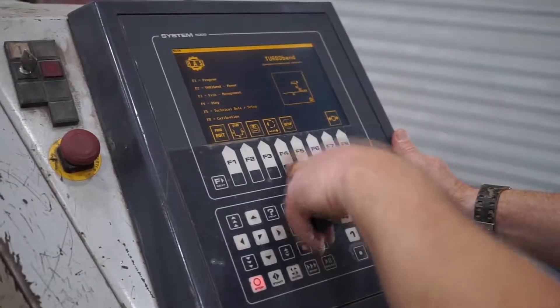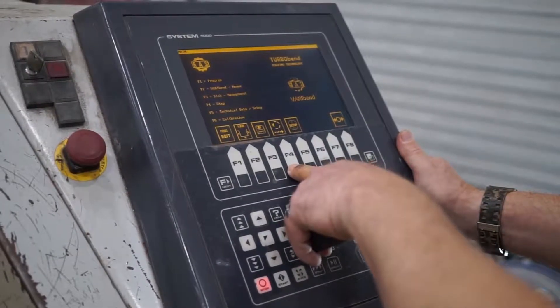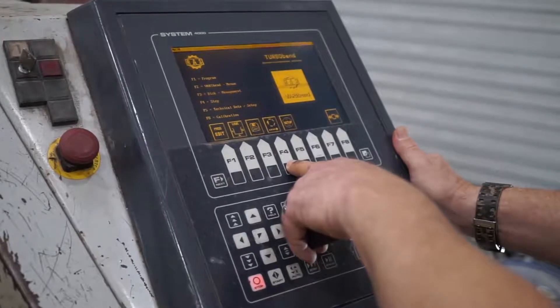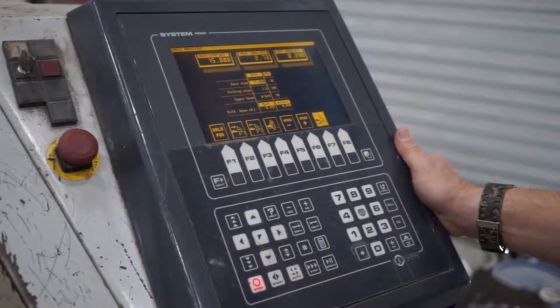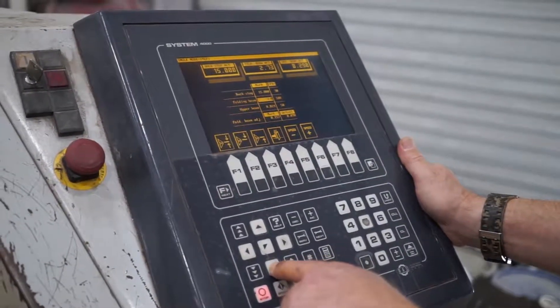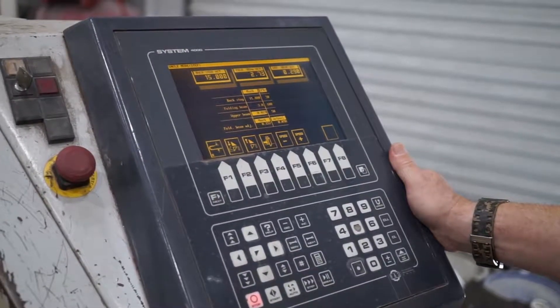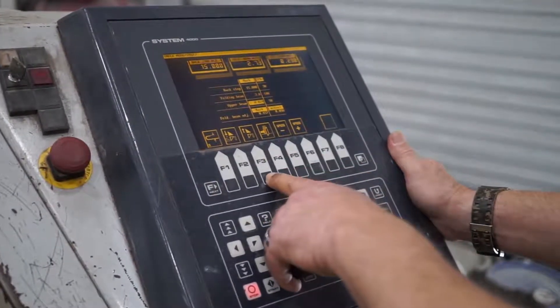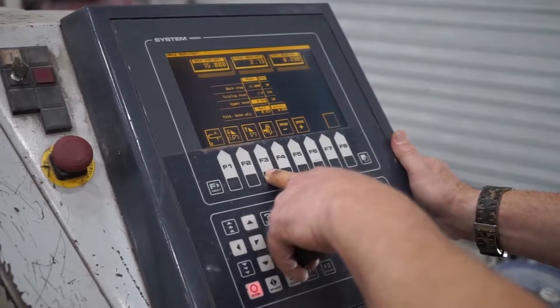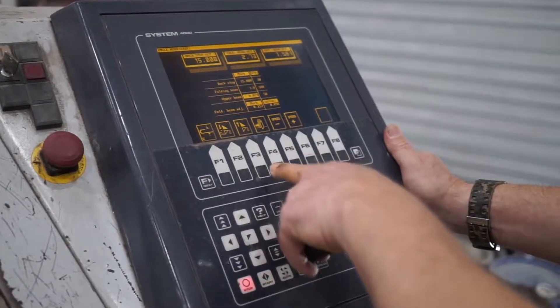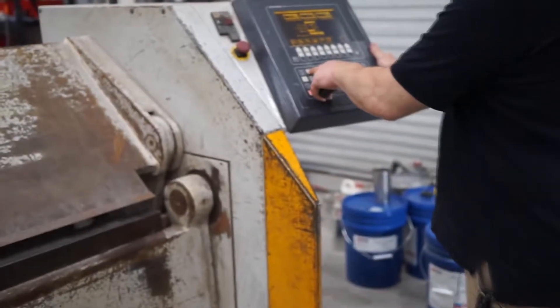In this case with the System 4000, with a 5000 it would be F6, but F4. I'm first going to go to the upper beam and use the F3 key to raise the beam up approximately two inches just so I can see the fingers good. So that's high enough.